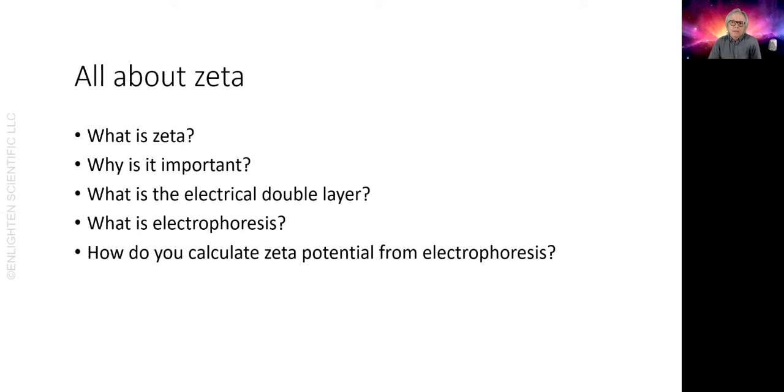How do you calculate zeta potential from electrophoretic mobility? Electrophoresis is the measurable phenomenon of your sample. Zeta potential is the property you want to obtain. There's a relationship between the two which I'll describe.